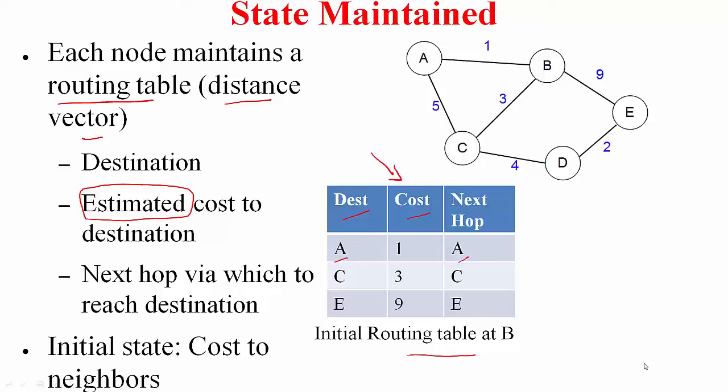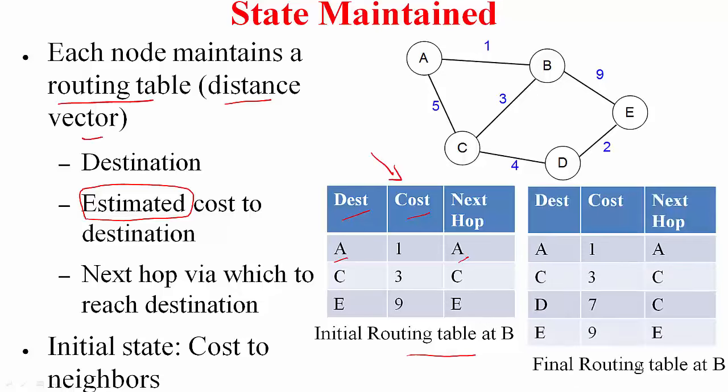It is a rather boring calculation, but try to determine the final routing table at B by looking at the figure and doing the calculations manually. When the topology is small you can calculate the final routing table quickly, but when the number of nodes is very large, you need an efficient algorithm that performs these iterations to arrive at the final routing tables — that is why we are studying this algorithm.